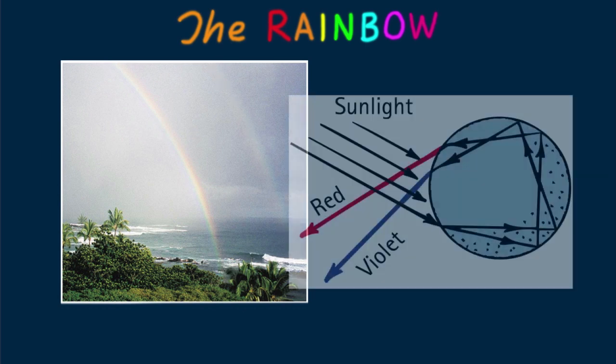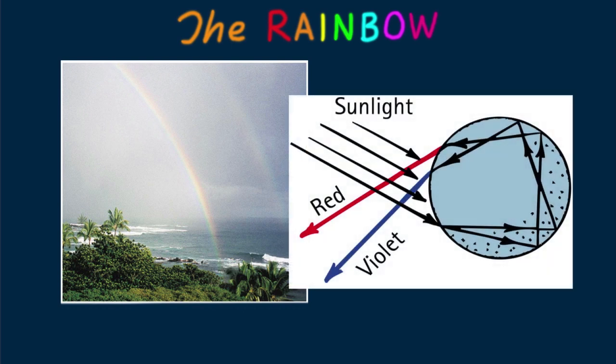Often a larger secondary bow with colors reversed can be seen arching at a greater angle around the primary bow. It's formed by similar circumstances but as a result of double reflection within the raindrops. Because of this extra reflection and extra refraction loss, the secondary bow is much dimmer and its colors are reversed.